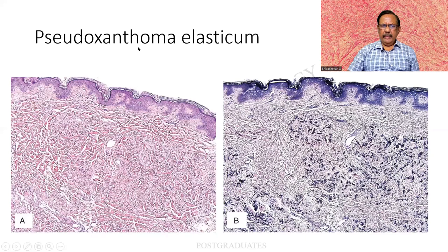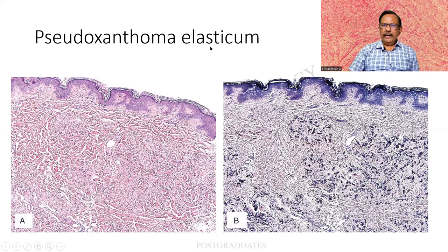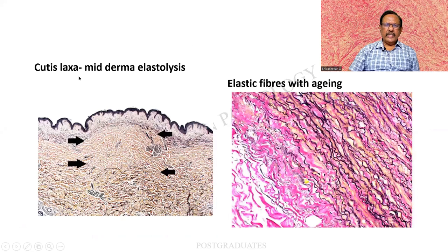Pseudoxanthoma elastica — it is a condition of the skin wherein there is a loss of elasticity. If you try to pull the skin of an elderly person, it takes some time to recoil. When a VVG is done, I am finding scattered and broken elastic fibres — pseudoxanthoma elastica. Cutis laxa and mid-dermal elastolysis — this is the epidermis and this is the mid-dermis. In this again there is a lack of elastic tissue. With aging, these elastic fibres, the black fibres, are getting broken. This is the normal connective tissue with the red colour.